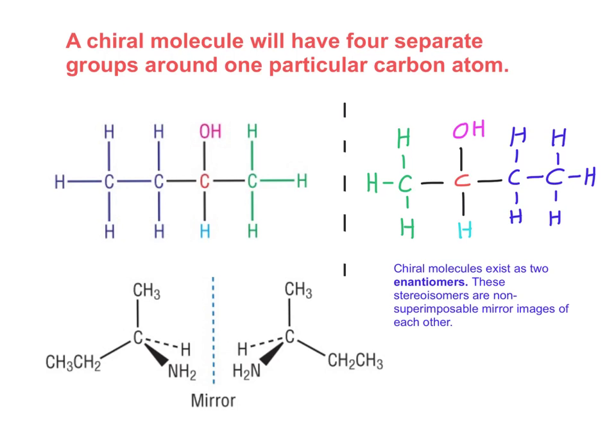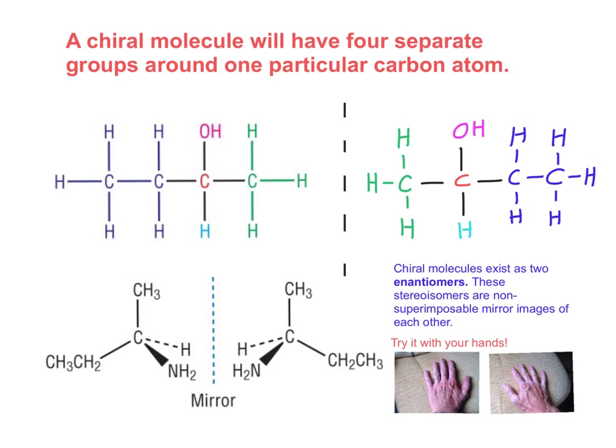If you try it with your hands, if you place your hands on top of each other, they won't be superimposable. To try and help demonstrate, I've taken a picture of my two hands, so sorry about that. If you imagine putting one on top of the other, the thumbs will be on opposite sides to each other. They won't automatically superimpose.